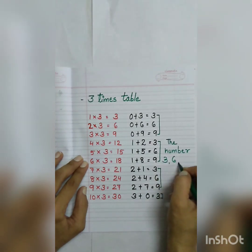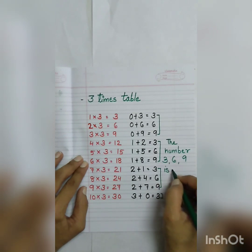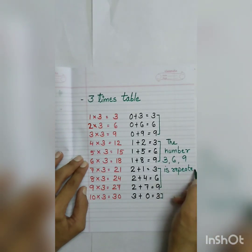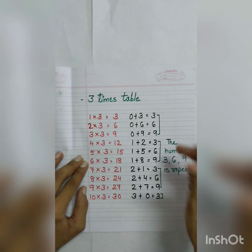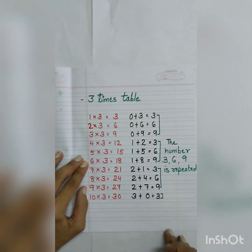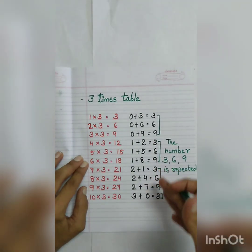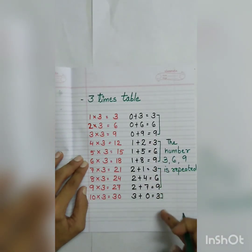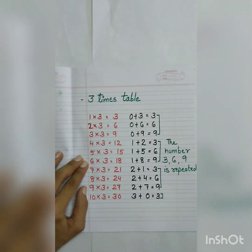Three, six, nine is repeated throughout. And if we carry this table forward, the next number after three will again be six. So this is the pattern in the table of three — the digit sum always cycles through three, six, nine.